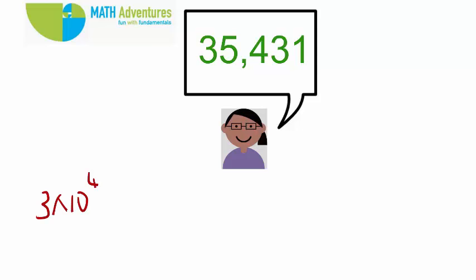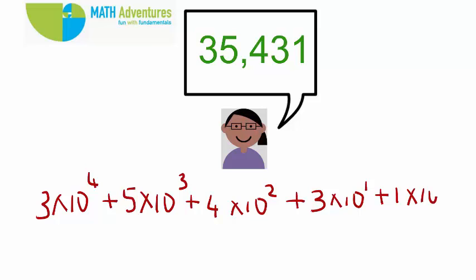Is it not 3 into 10 to the power of 4 plus 5 into 10 cube plus 4 into 10 square plus 3 into 10 to the power of 1 plus 1 into 10 to the power of 0?